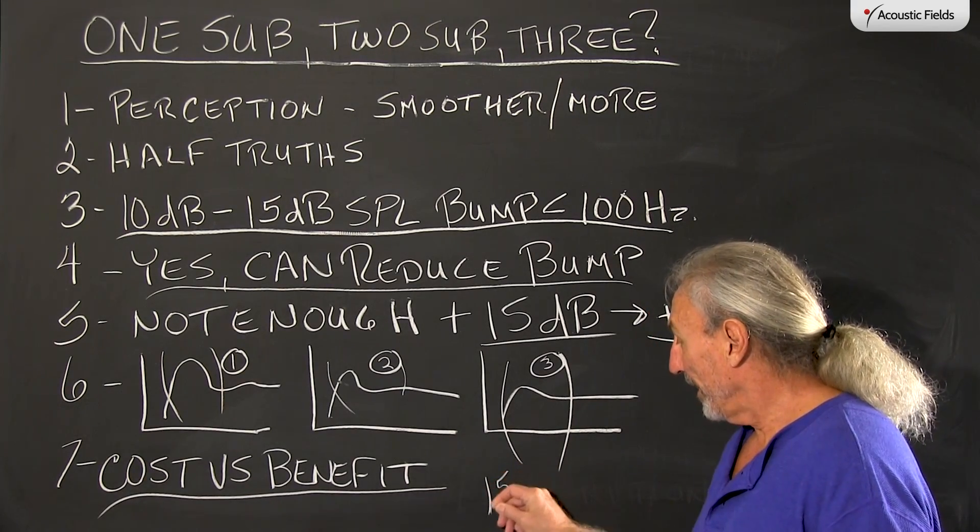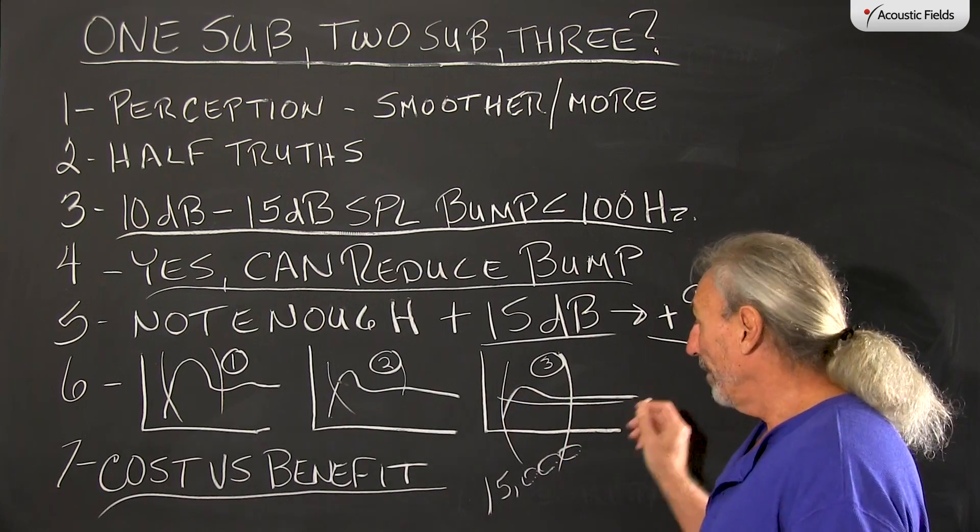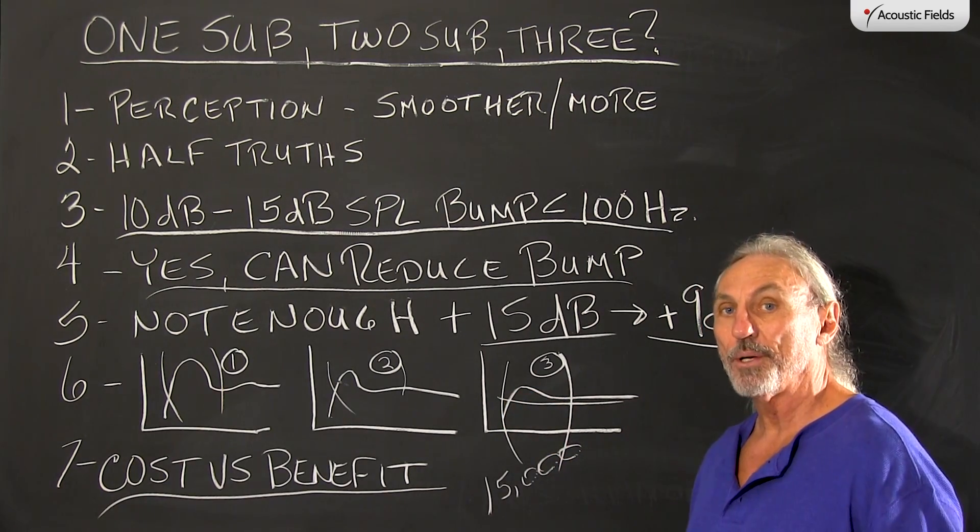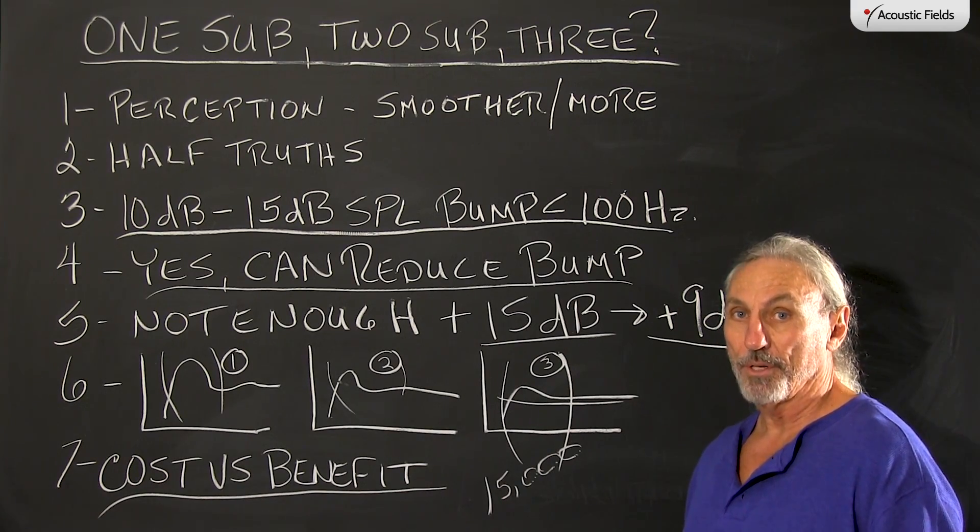And $15,000 in low frequency treatment can go a long way. In our rooms we shoot for a plus or minus 1 dB across the board. From 25 cycles on up, we guarantee it from 30.